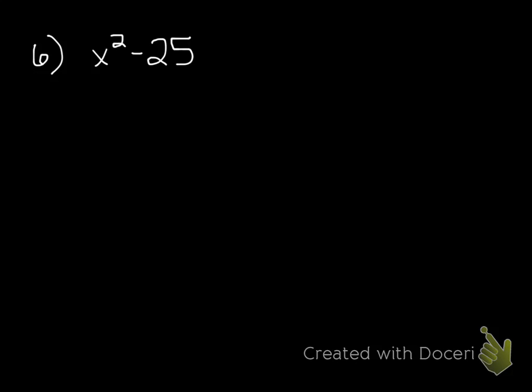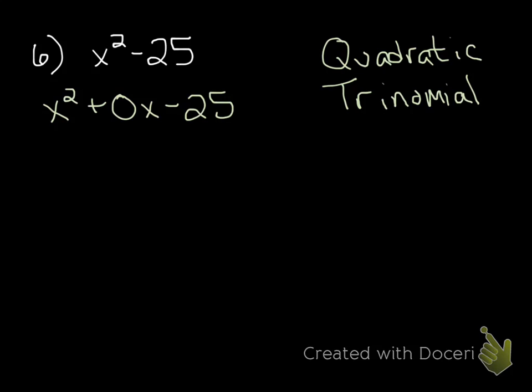On the matching part, problem 6, they give us x² - 25. This has the factoring pattern of difference of two squares, or another way to think about it is that it's a quadratic trinomial where the middle term is 0.